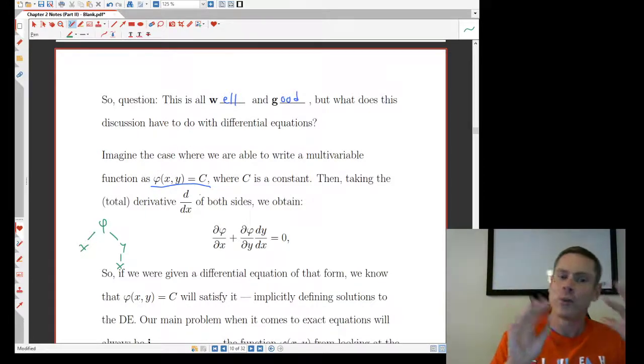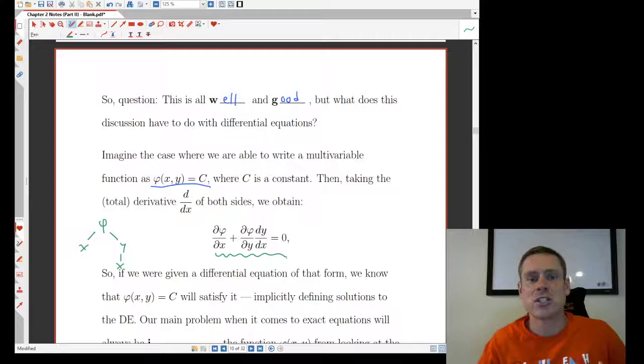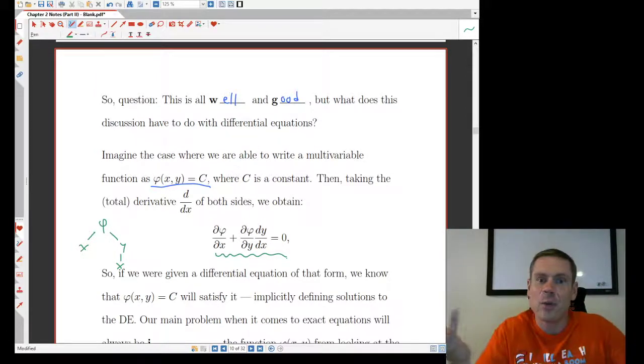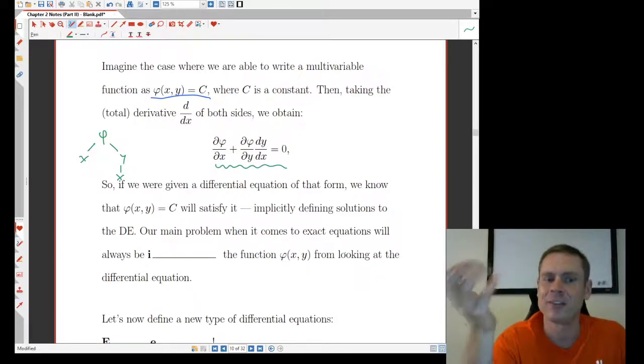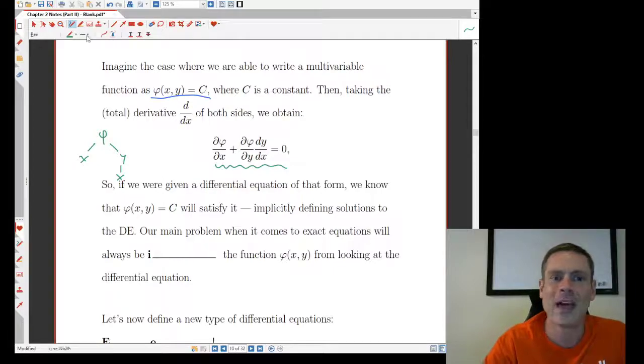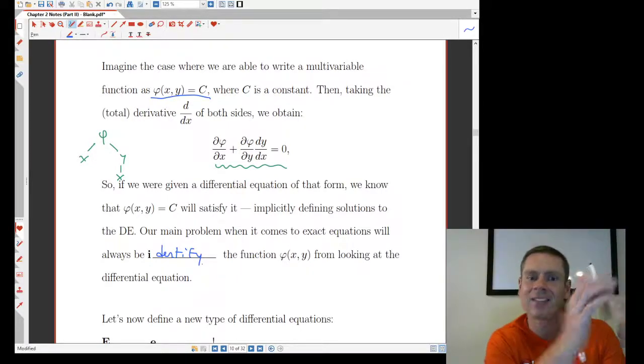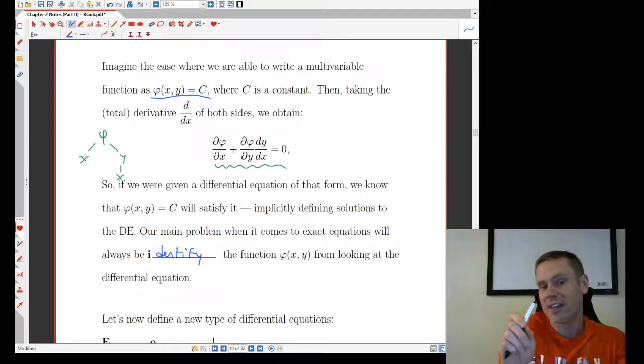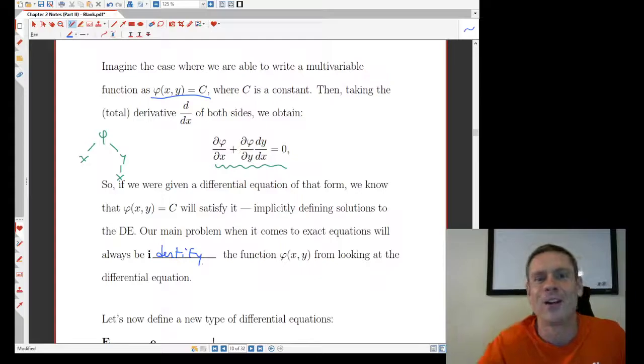∂φ/∂x plus ∂φ/∂y dy/dx. Those are the two branches of that tree and you can see that's exactly what I have on the left-hand side. On the right-hand side, I have the derivative of a constant which is 0. So if I have φ of x, y equals C and I take d/dx of both sides, this is what I get to right here. And this looks like a differential equation because I have derivatives in play in an equation. So if I have a differential equation of this form, I automatically know that φ of x, y equals C is going to satisfy that. And that's going to possibly implicitly define solutions to the differential equation. The question is going to be, well, how the heck do you figure out what the φ is, right? How do I identify the function φ of x, y from looking at the differential equation? And it's going to come down to this, right?